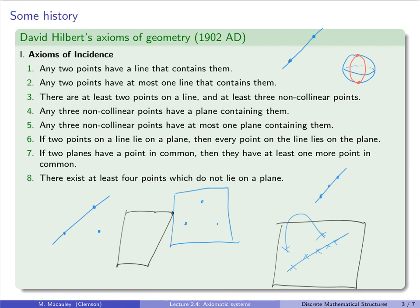And finally, the last one says, there exists at least four points which do not lie on a plane. So you can pick three non-collinear points that determines a plane. You can always find a fourth point that is not on that plane.